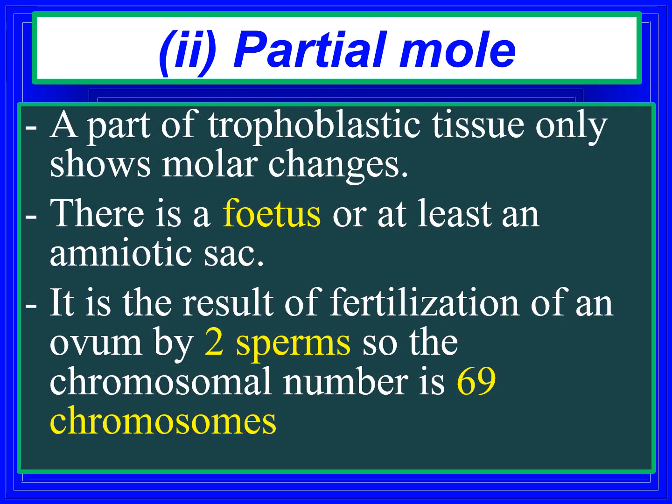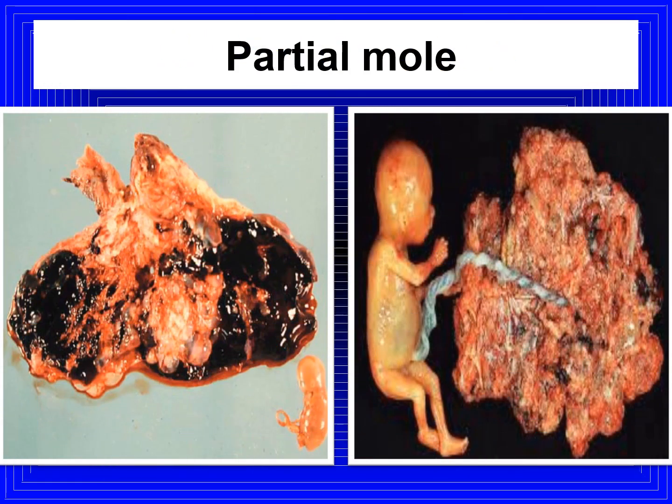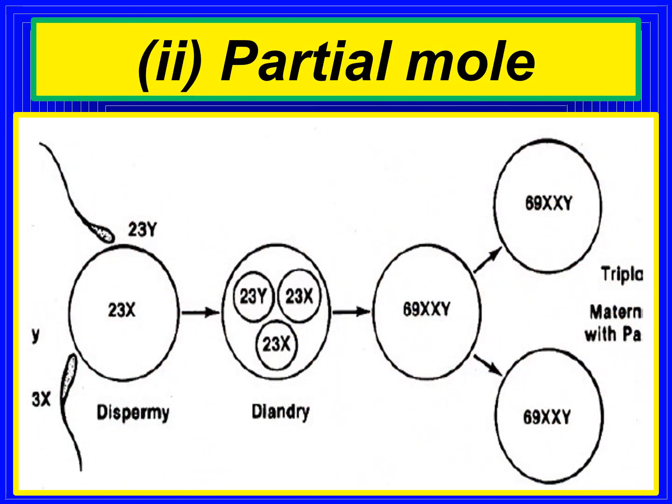In partial mole, only part of the trophoblastic tissue shows molar changes — evidence of a fetus can be seen. An amniotic sac will be present. It results from fertilization of an ovum by two sperms, giving a chromosomal number of 69. As shown in the picture, the partial mole fetus is visible and the placenta develops into moles. The chromosomal pattern will be 69 XXY — a triploid pattern.